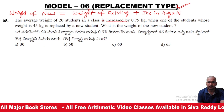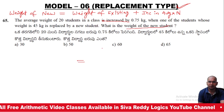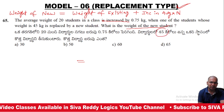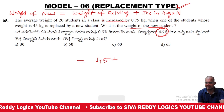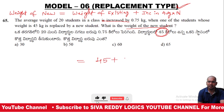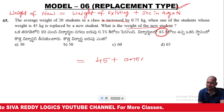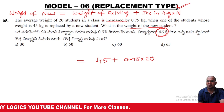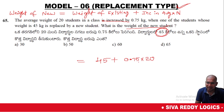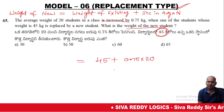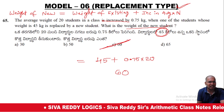The weight of the new student is equal to the weight of the existing student. Weight is 25 kg. Increase is plus, so increase is 0.75 into number of students, which is 20. So 25 plus 0.75 into 20 equals 25 plus 15, which is 40 kg.